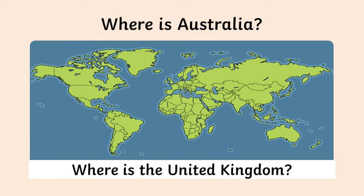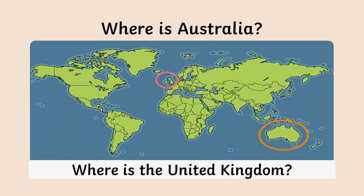If you have an atlas or even a globe at home, have a go at locating Australia and the UK on them. As you can see from the map on the screen, I have circled in red where the UK is and where Australia is. Have a look at what you notice between the two countries — are there any similarities or differences already between us here in the UK and Australia?